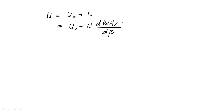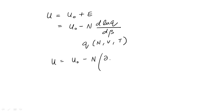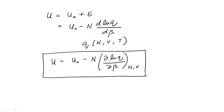Now, the partition function q can depend on variables other than temperature. The energies can depend on the volume and the summation on the number of particles. So q in principle is a function of N, V, and T. Therefore, the derivative of ln q that we have here is actually a partial derivative with constant number of particles and constant volume. So we can write u equals u0 minus N times the partial derivative of ln q with respect to beta, at constant N and V. This is the expression of the internal energy of a system in terms of its partition function.